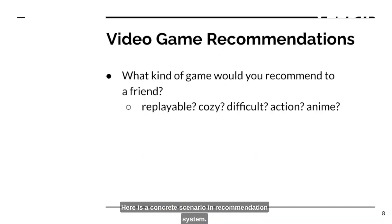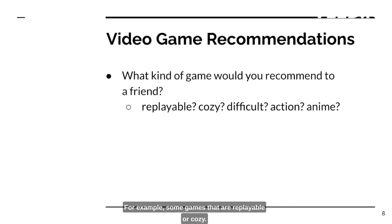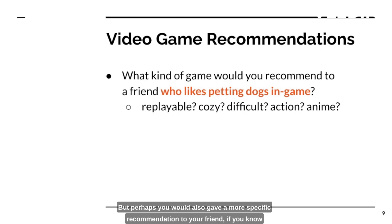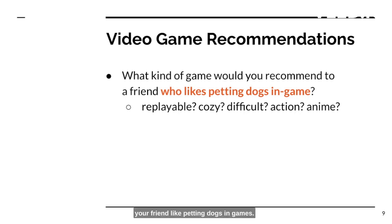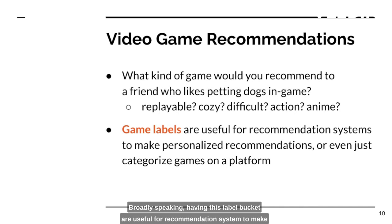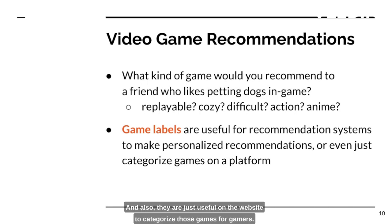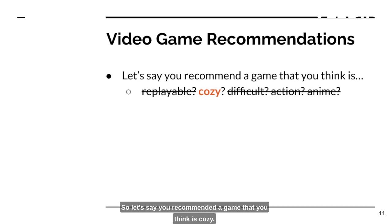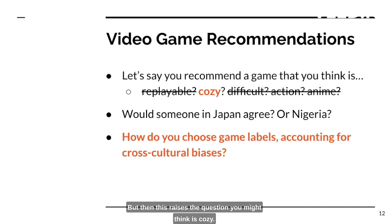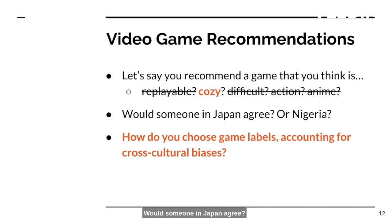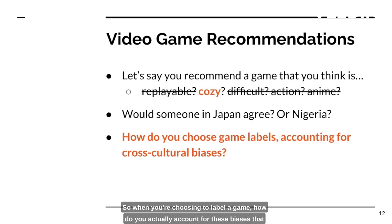Here is a concrete scenario in a recommendation system. Let's say you are recommending a video game to a friend. Maybe you have some categories in mind — for example, some games that are replayable or cozy. But perhaps you would also give a more specific recommendation if you know your friend likes petting dogs in games. Having these label buckets is useful for recommendation systems to make personalized recommendations, and also useful on websites to categorize games for gamers. So let's say you recommend a game you think is cozy — but would someone in Japan agree? What about Nigeria? How do you account for these biases that occur cross-culturally when choosing to label a game?